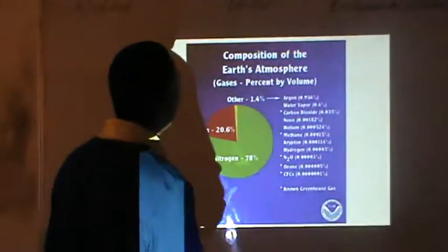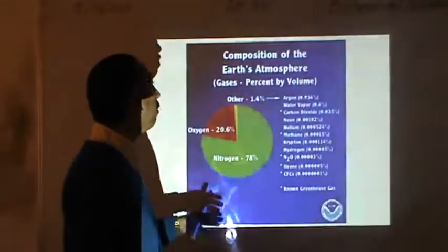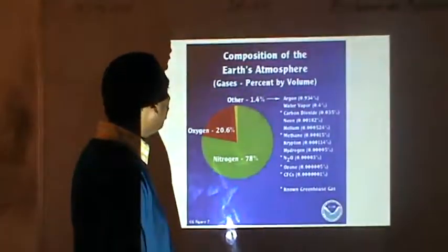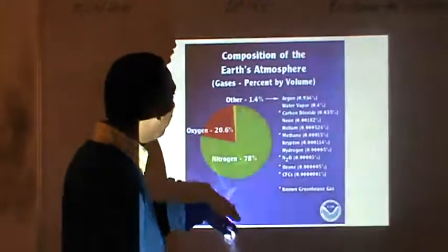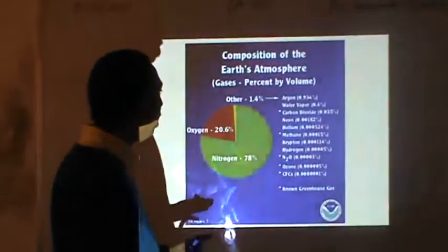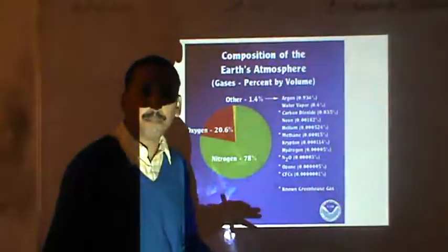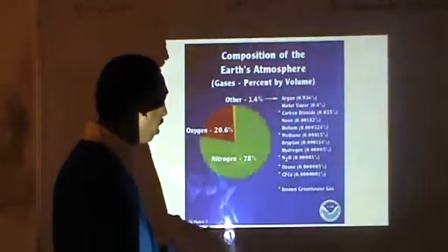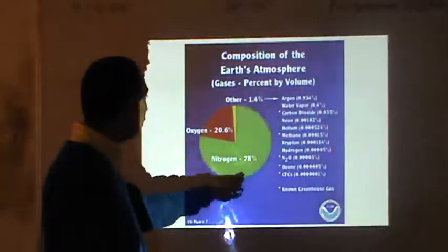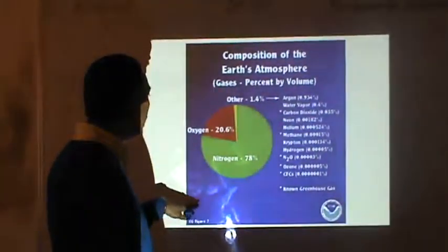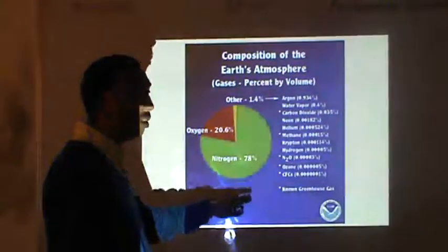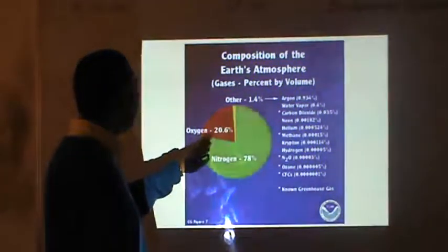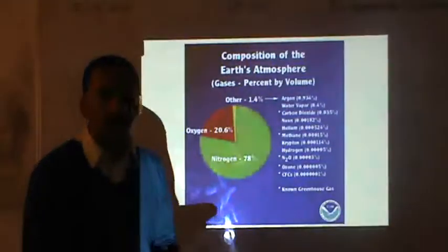Let us see the composition of the earth's atmosphere — the main gases present by percent volume. We have argon, water vapours, carbon dioxide, neon, helium, methane, krypton, hydrogen, ozone, chlorofluorocarbons. The maximum portion consists of nitrogen — about 78% by volume — and then we have 18 to 20% oxygen by volume.